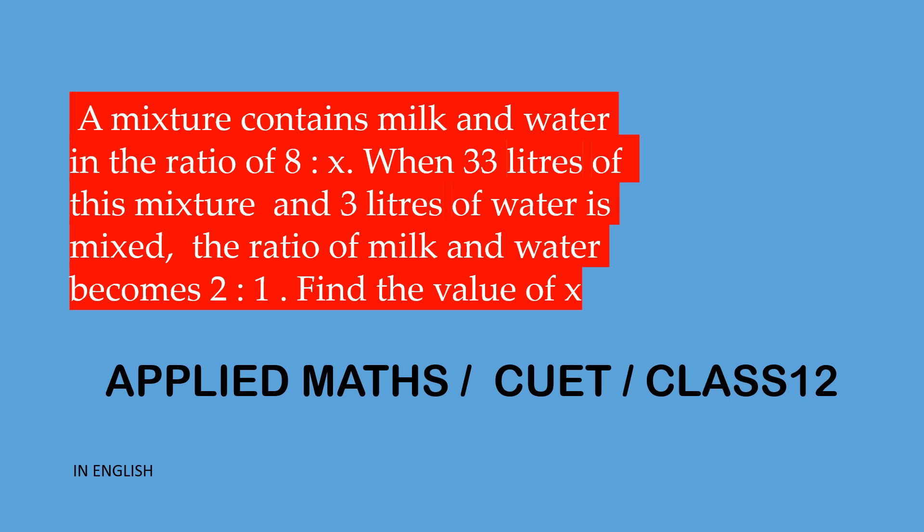A mixture contains milk and water in the ratio of 8 to x. When 33 liters of this mixture and 3 liters of water is mixed, the ratio of milk and water becomes 2 to 1. Find the value of x.